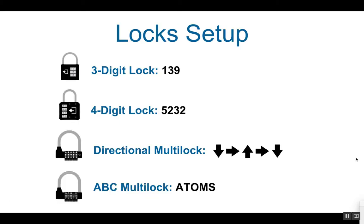To set up the locks: the 3-digit lock is 1-3-9. The 4-digit lock is 5-2-3-2. The directional multi-lock is down, right, up, right, down. And the ABC multi-lock is ADAMS.